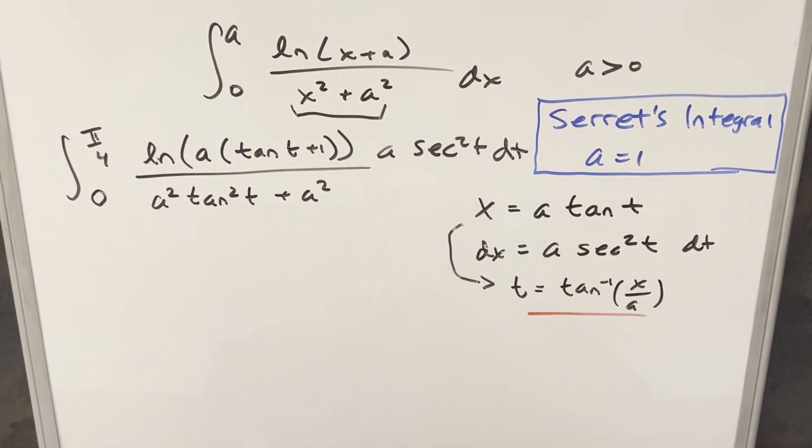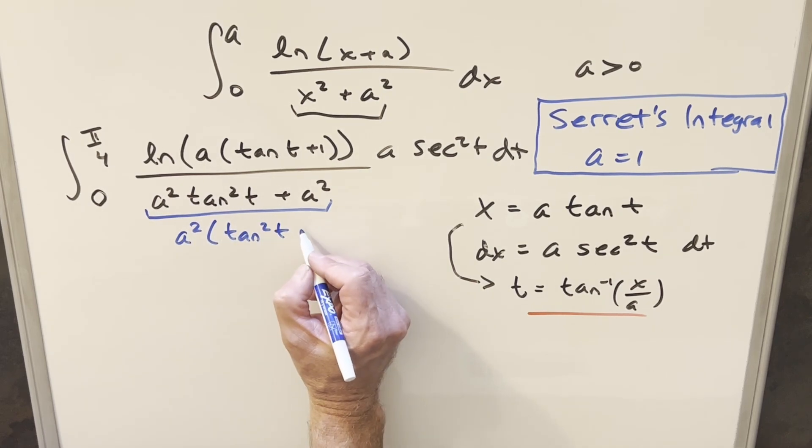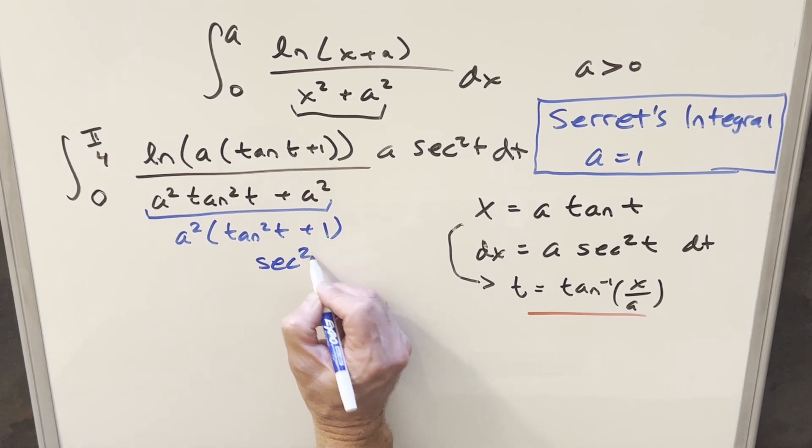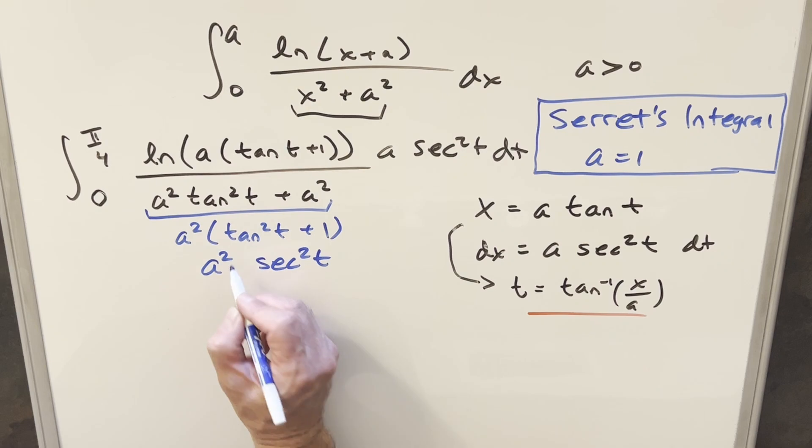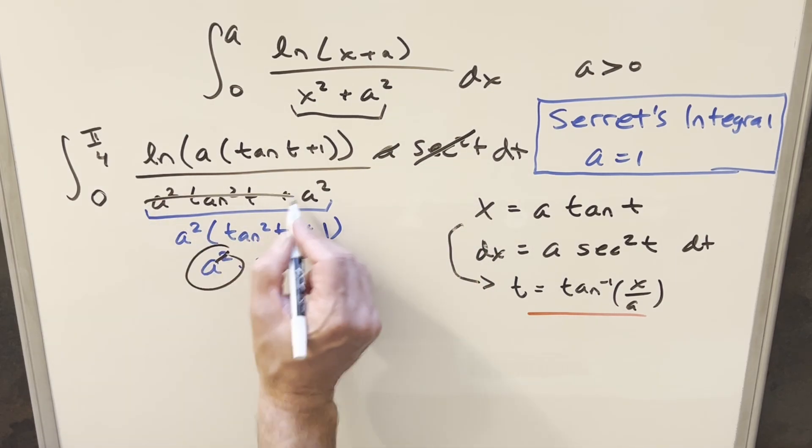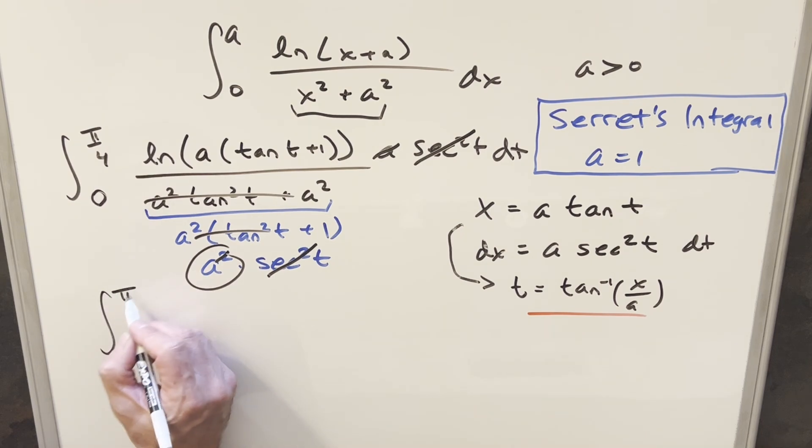Now this is starting to look more complicated than what we had, but we're making some progress anyway. Here, what we'll do, let's try to simplify this. If I factor out A squared, we end up with A squared times tan squared t plus 1. But tan squared t plus 1, we have the identity that this is the same thing as secant squared t. And so then, what we can do is, we have A squared times secant squared t in the denominator, and A secant squared t in the numerator.